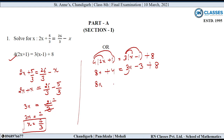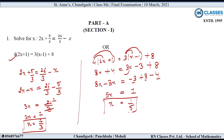Now let's take the x-value terms to the left-hand side. 8x, plus 3x transposed gives minus 3x, equal to minus 3 plus 8 minus 4. So 8x minus 3x gives 5x equal to minus 4 minus 3 is minus 7, plus 8 gives 1. So here the x-value is 1 upon 5.